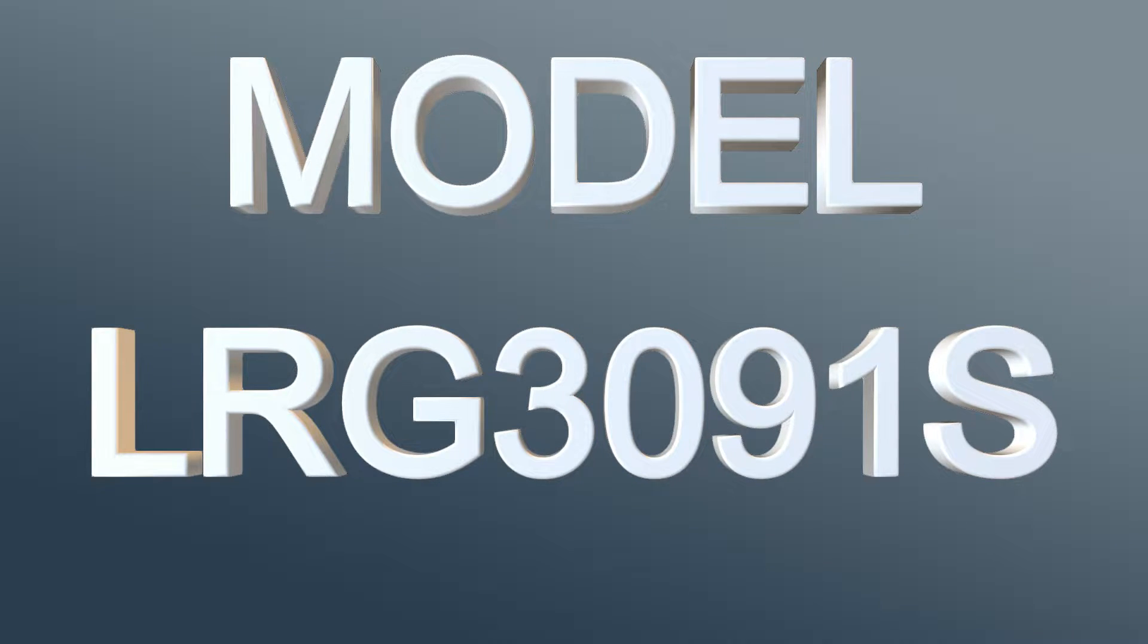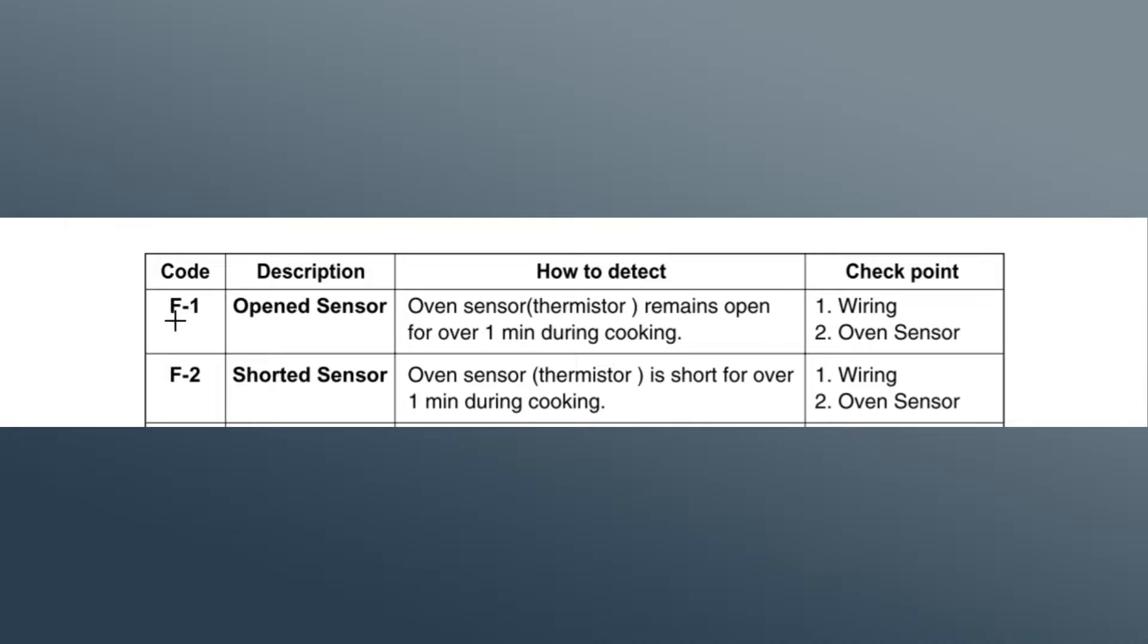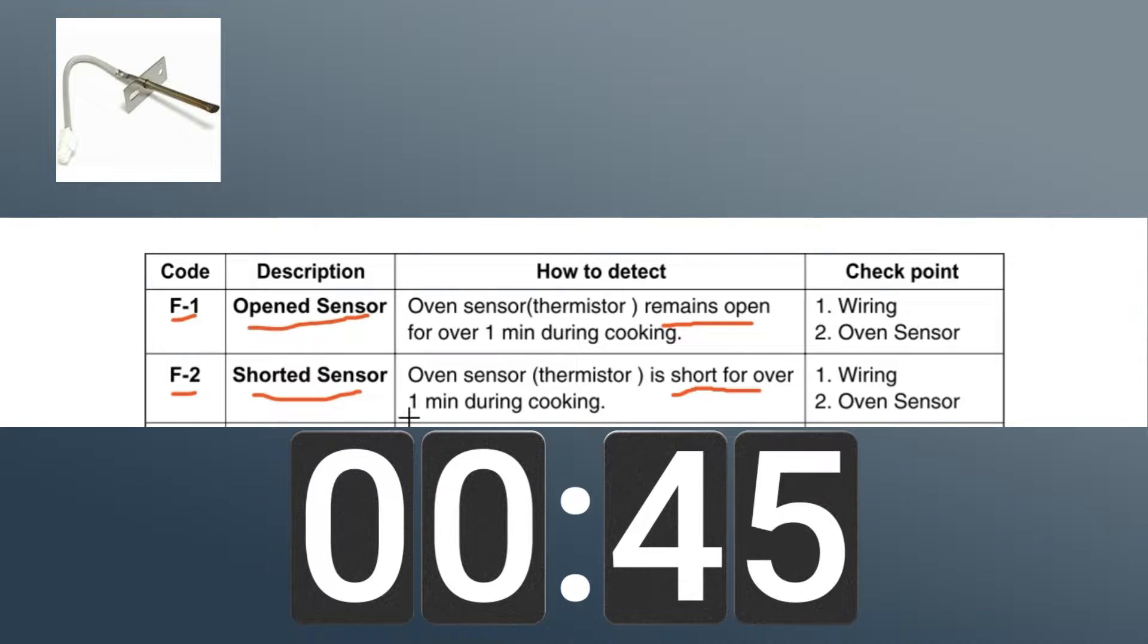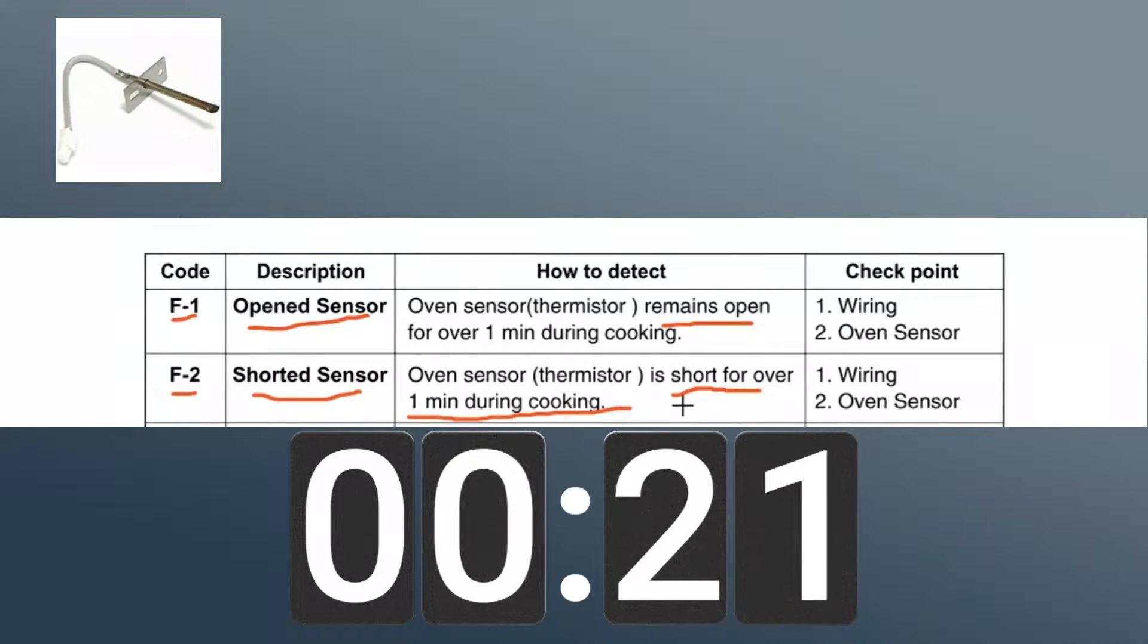So if this is your model, this video is for you. The F1 means open sensor, F2 means shortage sensor. This pops up when the main control board indicates that the line remains open within a minute duration time of cooking. And vice versa for the F2 shortage sensor, if the short is detected by the main control board within a one minute duration time of cooking, it will show these codes.